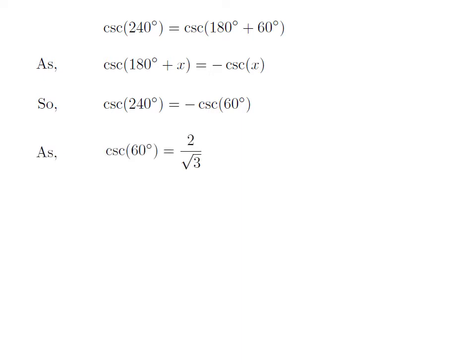We know the value of cosecant of 60 degrees is equal to 2 upon square root of 3. So, we get the value of cosecant of 240 degrees is equal to minus 2 upon square root of 3.